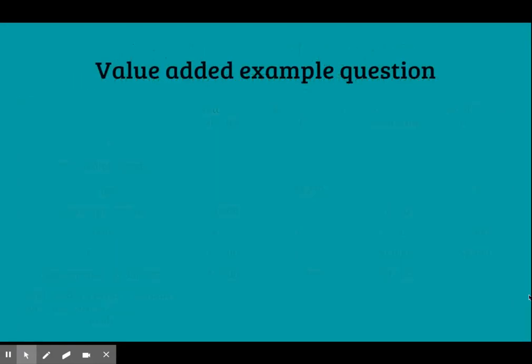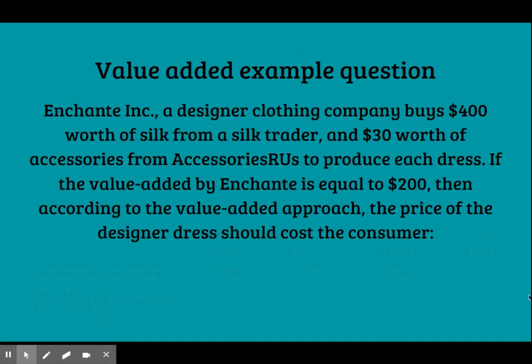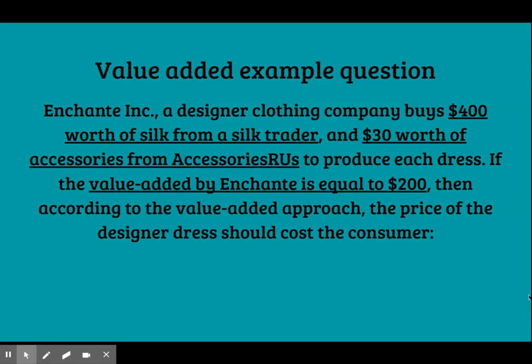Let's do an example question. Enchanté Inc., a designer clothing company, buys $400 worth of silk from a silk trader and $30 worth of accessories from Accessories RS to produce each dress. If the value added by Enchanté is equal to $200, then according to the value-added approach, what should the price of the designer dress cost the consumer? The sales price of a good should include the value of all the resources used to produce it: $400 for silk, $30 for accessories, and the value added of $200. Value added is the sales price minus the value of all intermediate goods purchased. So, adding up the value of the intermediate goods ($430) and the value added by the dressmaker ($200), we get a sales price of $630.